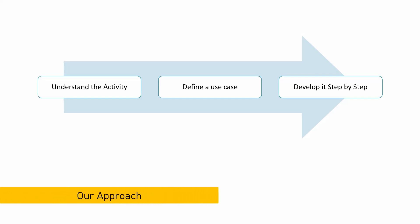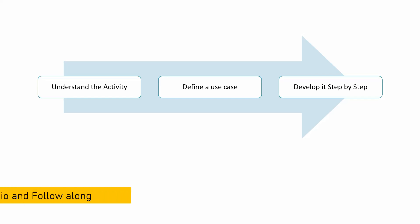This is the approach we are going to take. First, we are going to understand what exactly the activity is — that would be the theoretical part. Then we are going to define a small use case, a pretty basic one, and then we are going to develop that use case step by step using the GenAI activities along with RPA. Please open your UiPath Studio and follow along.